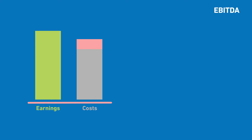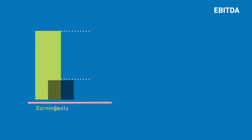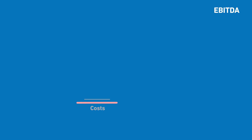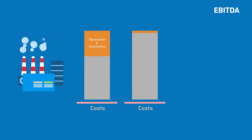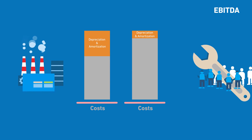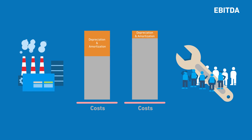In addition to interest and taxes, EBITDA does not consider depreciation — i.e. the wear and tear on our assets. This way, results of capital-intensive business areas such as our power plants can be better compared with areas such as energy services or trading, i.e. business areas that require fewer fixed assets.